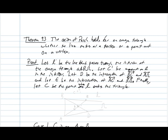In this pencast, we're going to talk about the proof of theorem 9.3, which says that the axiom of Pasch holds for an omega triangle whether the line enters at a vertex or at a point not on a vertex.